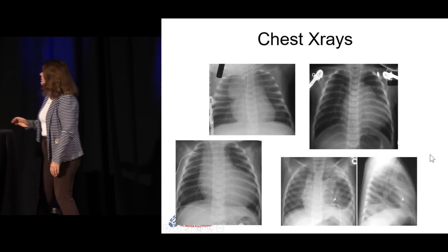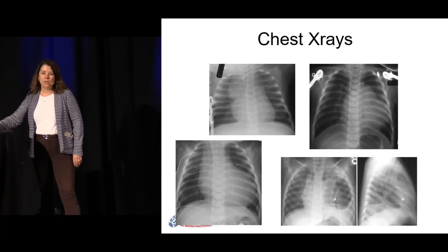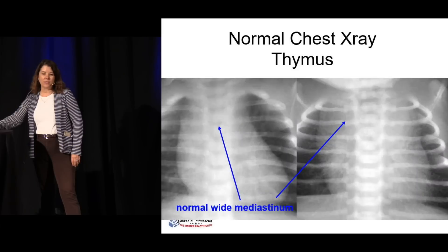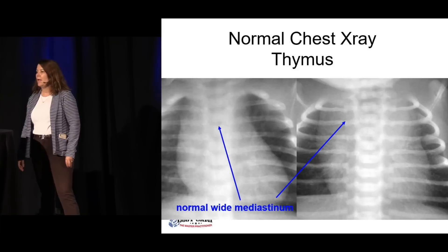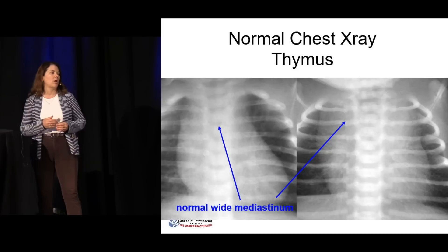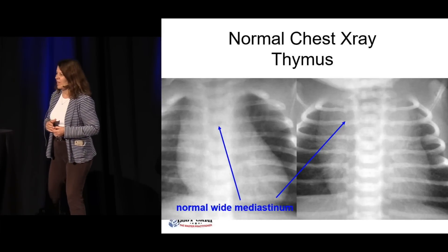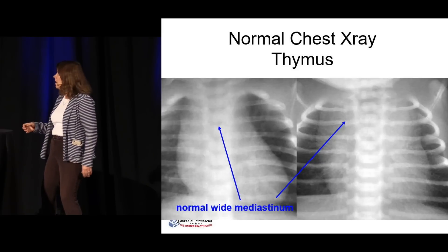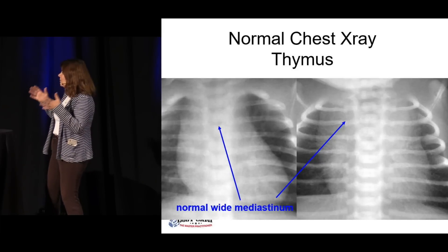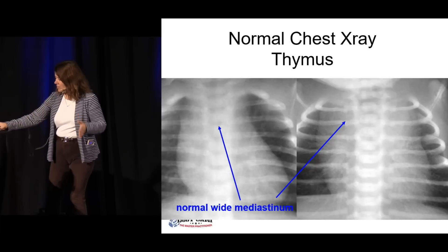A little bit on chest x-rays. Chest x-rays are probably one of the most common x-rays you're going to get in young children. The first thing is that a plain film on a young baby, the mediastinum is going to look really, really wide. You're going to think this child has cardiomegaly. And what you're really seeing is the thymus. It's very generous up until about six months of age, in some kids a little bit longer, but it's going to have this very prominent, wide mediastinum.